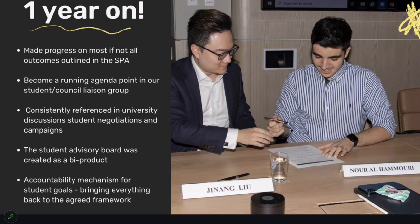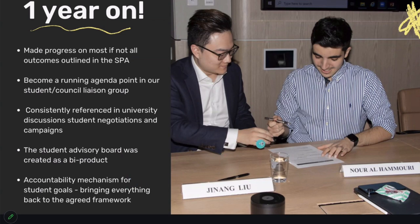The UTS Council — the highest governing body — has one ex-officio member from the student group who communicates student issues to council, making the SPA outcomes a running agenda item: where are we with SPA outcomes? This gives students the opportunity to make those contributions, which is wonderful. The SPA is referenced consistently and has become part of the lexicon of student leadership at UTS. It's also a really good accountability mechanism for the things we work towards.